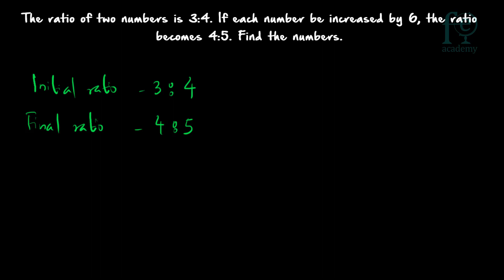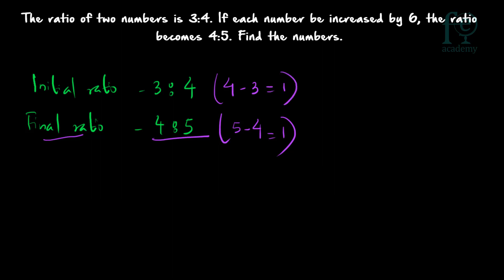The first step is to find out the difference between the antecedent and the consequent in the final ratio. Here the difference is 5 minus 4, which is equal to 1. Now check the initial ratio: the difference is 4 minus 3, which is also equal to 1. Since the differences are the same, you need not do anything. If the difference was a different number, you would need to convert it so that the differences in both ratios match.